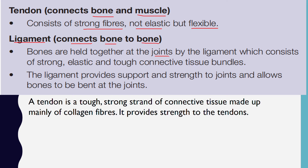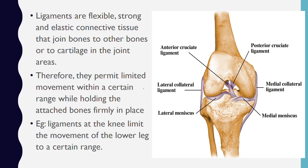Ligaments function to connect bone to bone. Bones are held together at joints by ligaments, which consist of strong, elastic and tough connective tissue bundles. Ligaments provide support and strength to joints, allowing the bones to bend at the joints. They are flexible — strong elastic connective tissues joining bones to other bones or to cartilage in the joint areas, permitting limited movement within a range while holding the attached bones firmly in place.